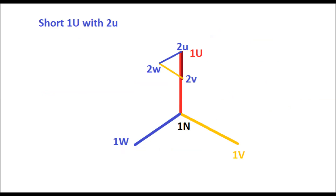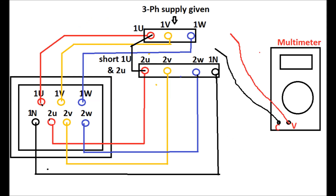In order to test the vector group of a YND1 power transformer, we first have to short the HV red with the LV red — that is, 1U with 2U. Then we have to supply a low-tension three-phase supply to the primary winding, that is 1U, 1V, and 1W. The schematic diagram for the vector group test of YND1 is shown here.